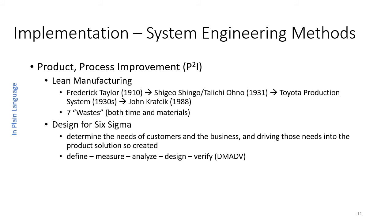Design for Six Sigma should not be confused with the Six Sigma black belt. Six Sigma black belt typically takes an existing process or product and uses statistical methods to improve it. Design for Six Sigma is a spin-off in the sense that it ensures the product being developed and implemented meets the needs of the customer and the requirements in the design. Design for Six Sigma uses a cyclical process of define, measure, analyze, design, and verify — DMADV.